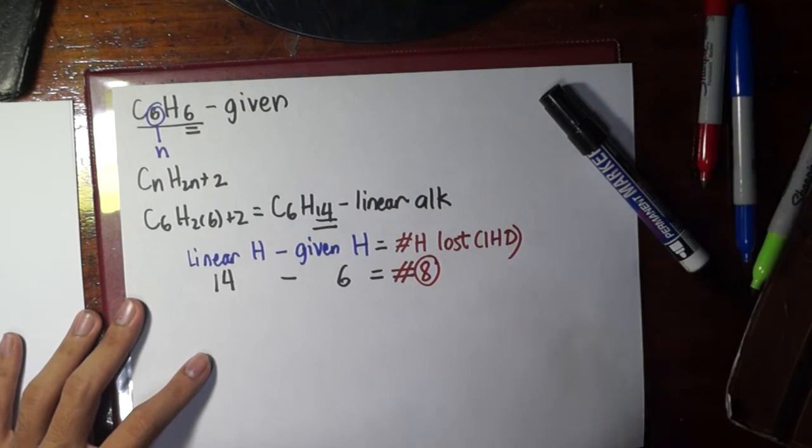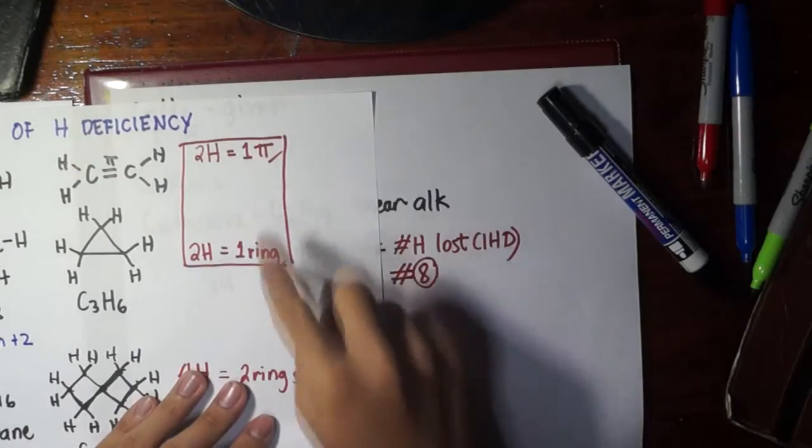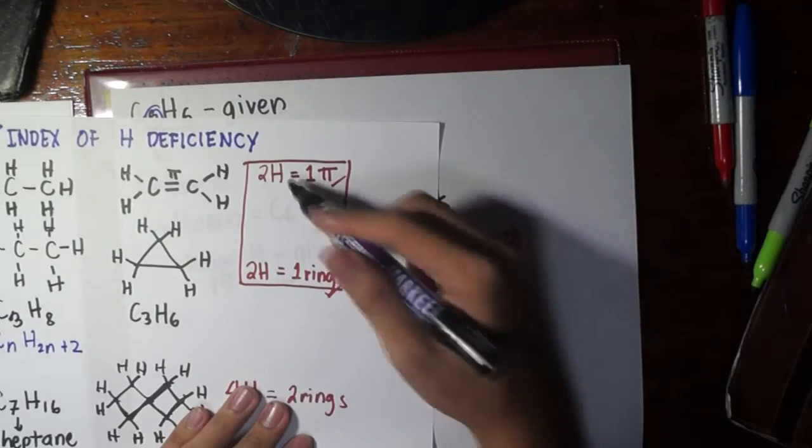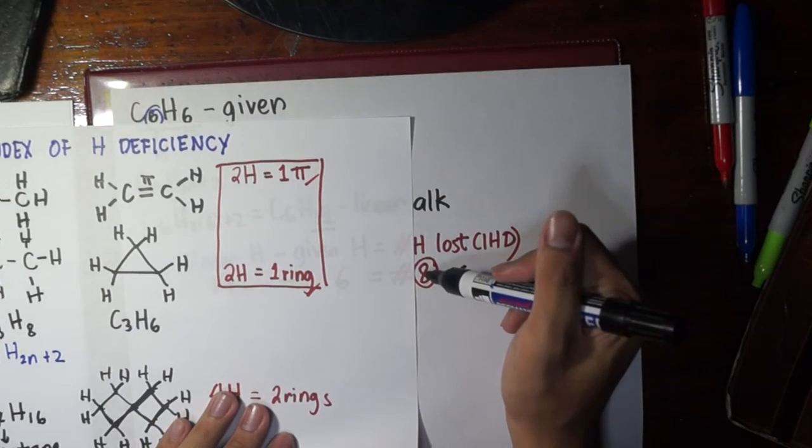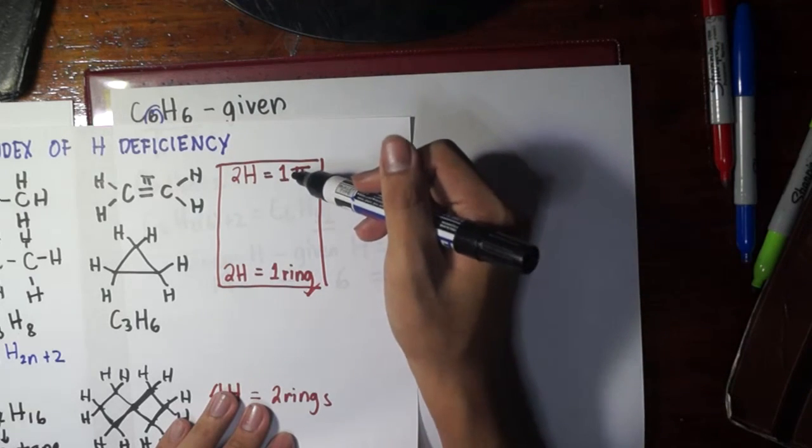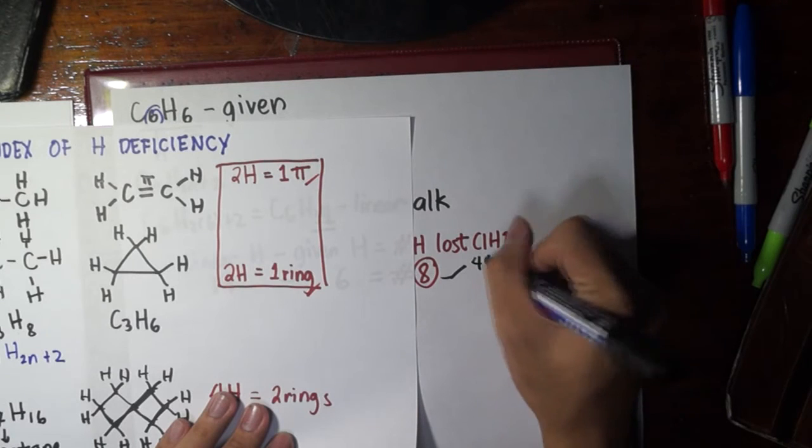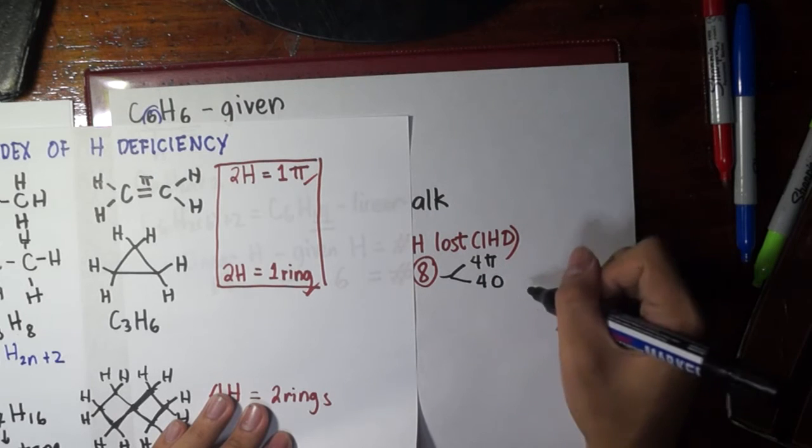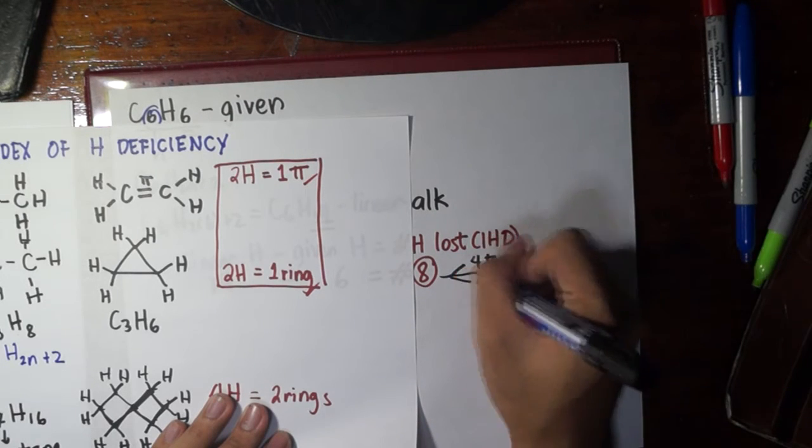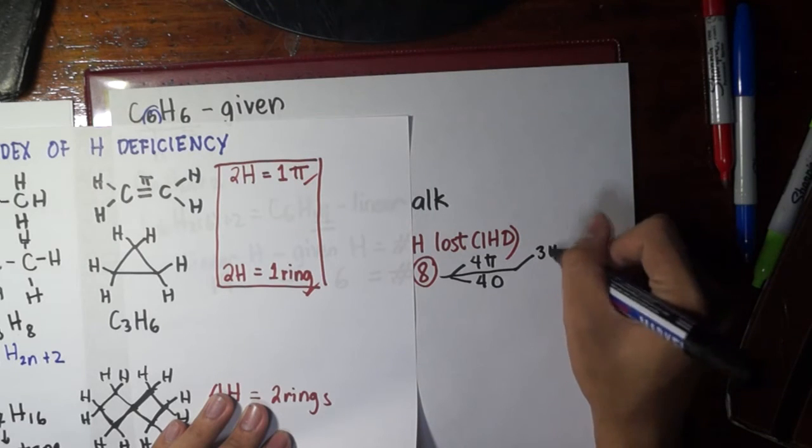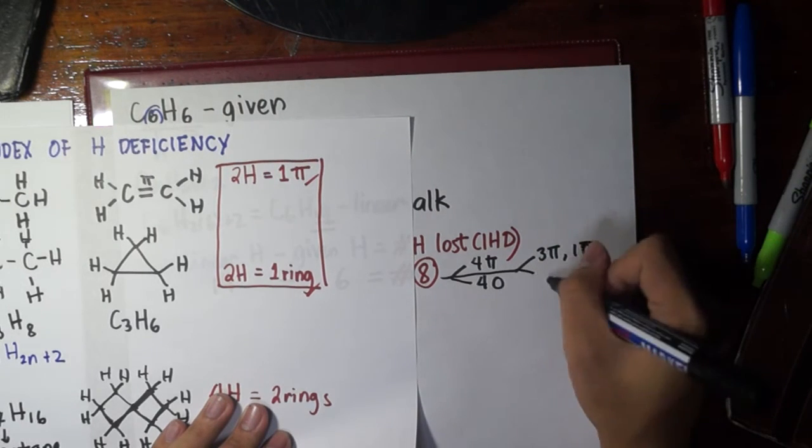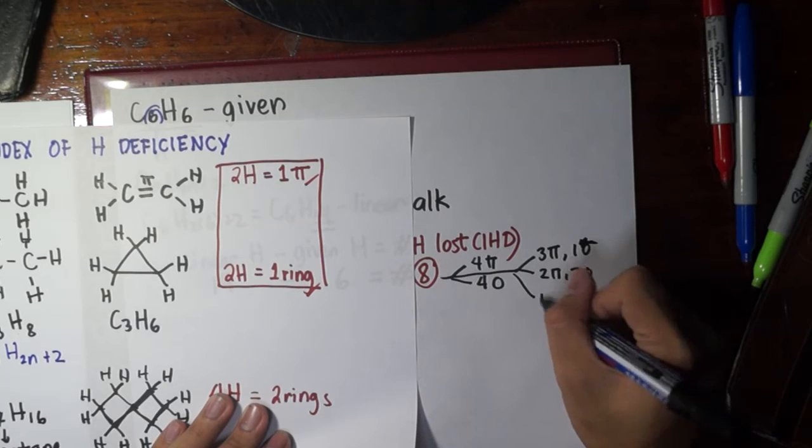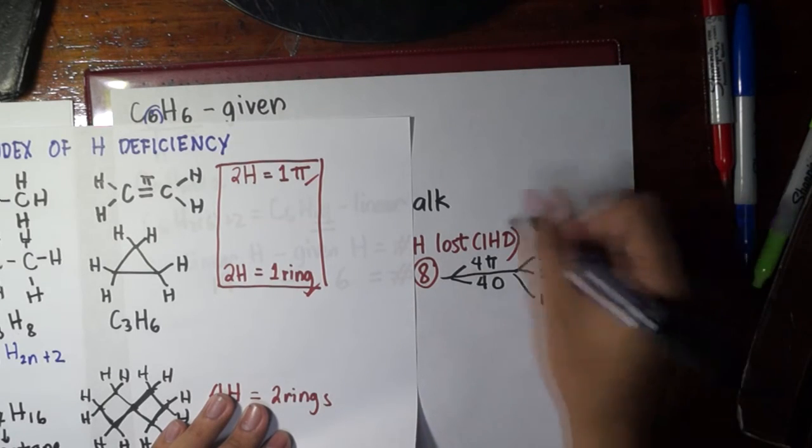So, meaning, if we have 8, then what does that imply using this guideline? It could mean a lot of things. First of all, since you have 8, you could possibly use all of that, 8 hydrogens, to have how many pi bonds? 2 is to 1, so 8 is to 4 pi bonds. Or, in another manner, you could possibly have 4 rings. Or, you could have a mixture of these. Like, we could have 3 pi bonds and 1 ring, 2 pi bonds and 2 rings, 1 pi bond and 3 rings. So, these are your options.